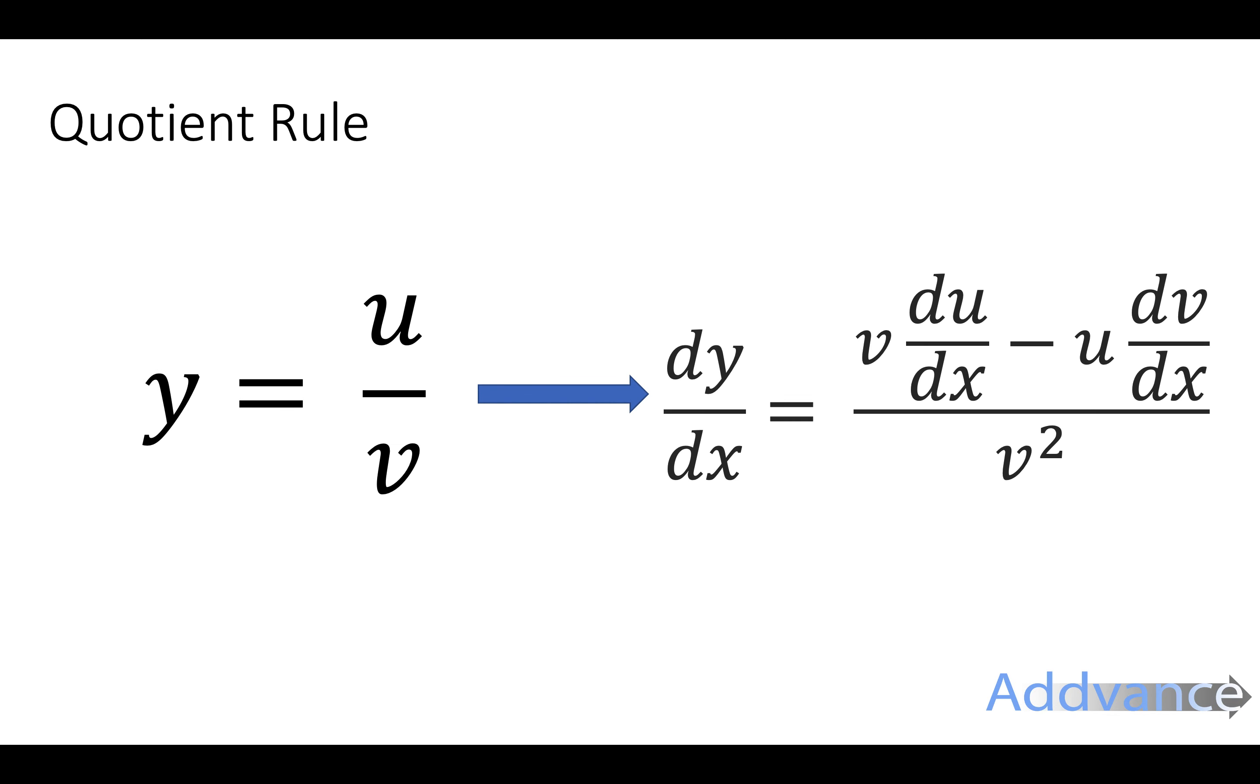So the quotient rule tells us that if you differentiate this you will get dy over dx is v du over dx minus u dv over dx over v squared.